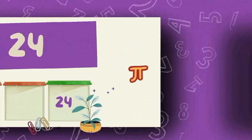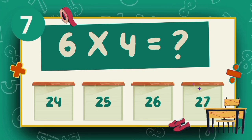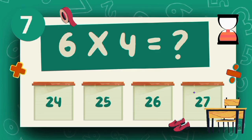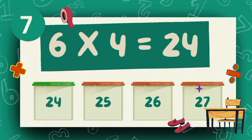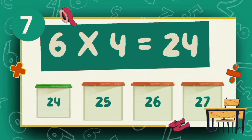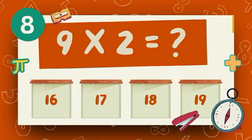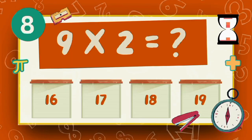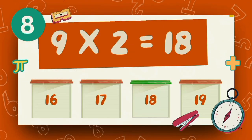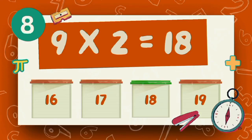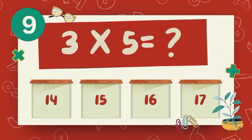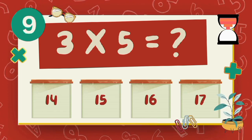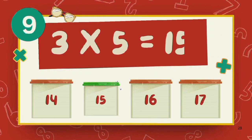What is 6 multiply 4? The answer is 24. What is 9 multiply 2? The answer is 24. What is 3 multiply 5? The answer is 15.